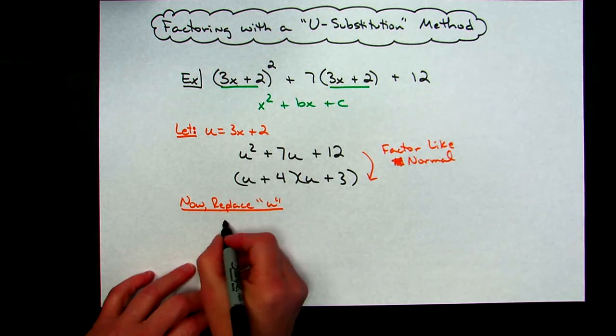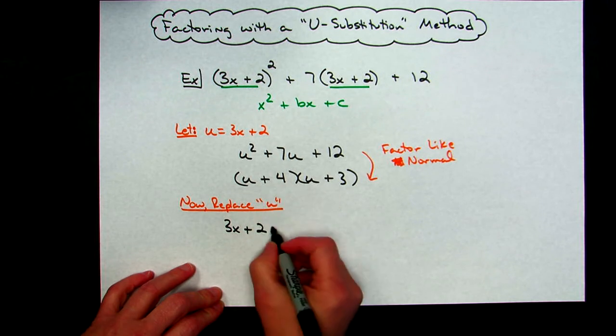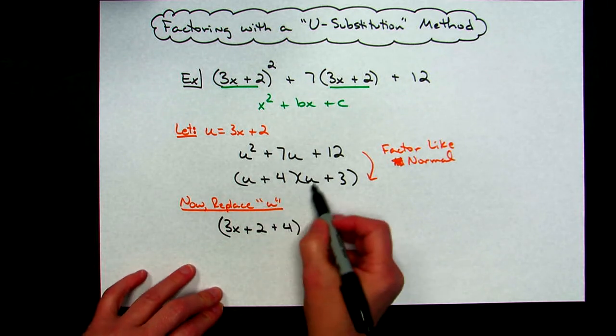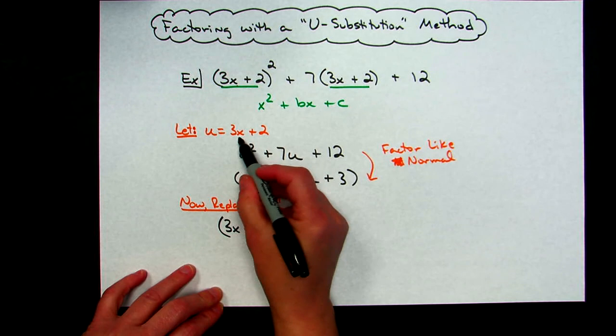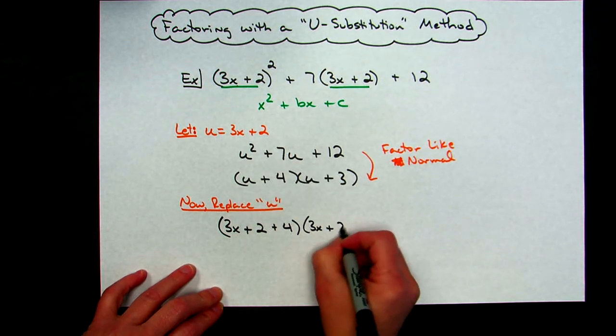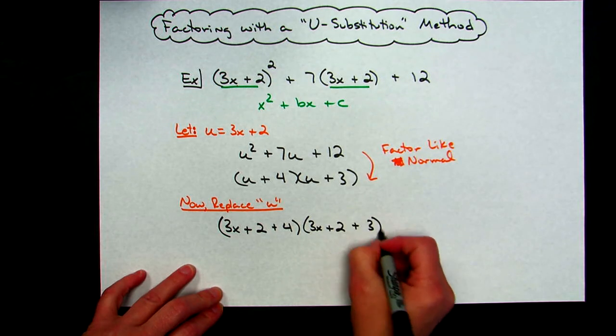I'm going to replace what I let u to be in there originally, so u is 3x+2, so I'm going to replace it right there, I'm going to go 3x+2, now the 4 is still there, so I'm going to do plus 4. And I'm going to do the same thing this term, that's my u, I'm going to replace it with the 3x+2, so I'm going to go 3x+2, I replaced it there, the 3 is still there.